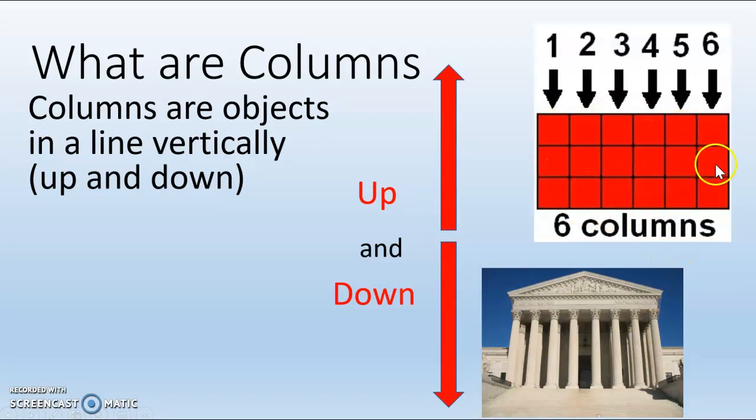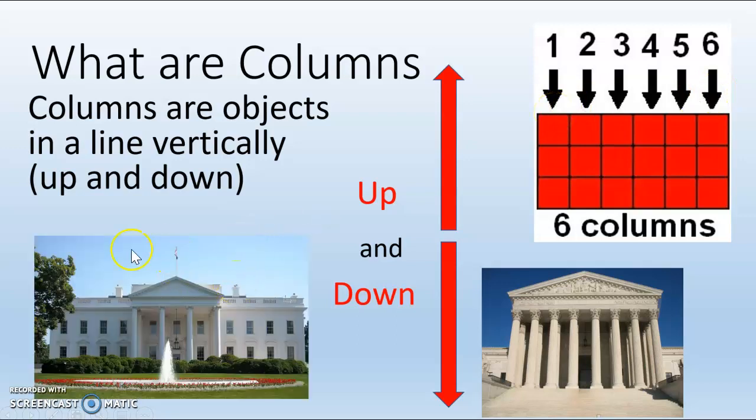This array has six columns. One, two, three, four, five, six. This is the White House where the president lives, and it has columns that support the front of the building.